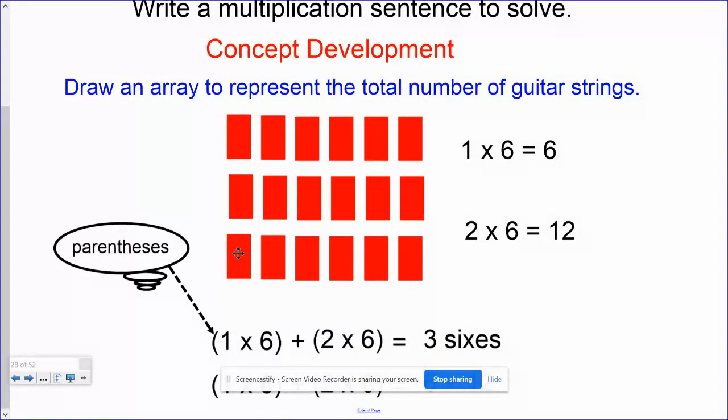Another row and another row. Now, I actually have two different multiplication problems. I have one times six, which is the first six, plus two groups of six. So, I have three sixes total.